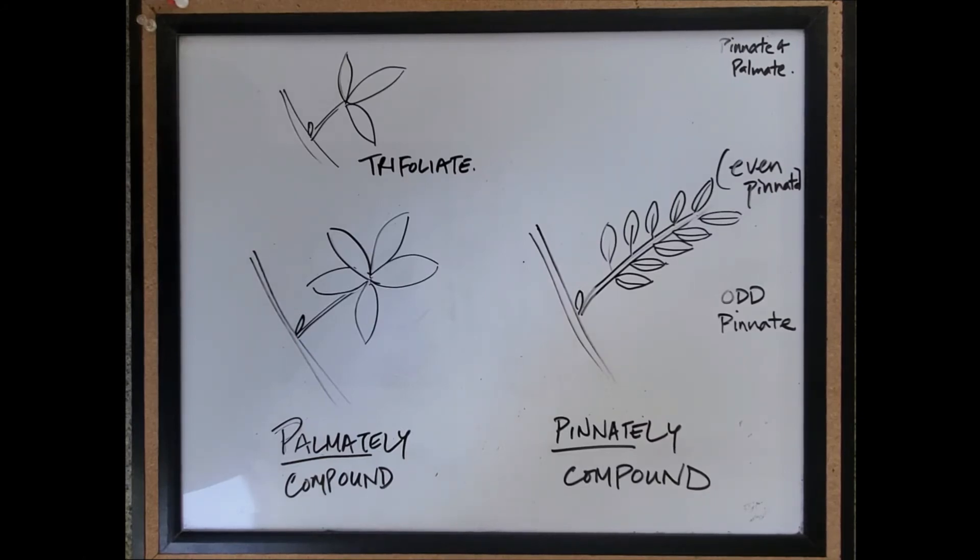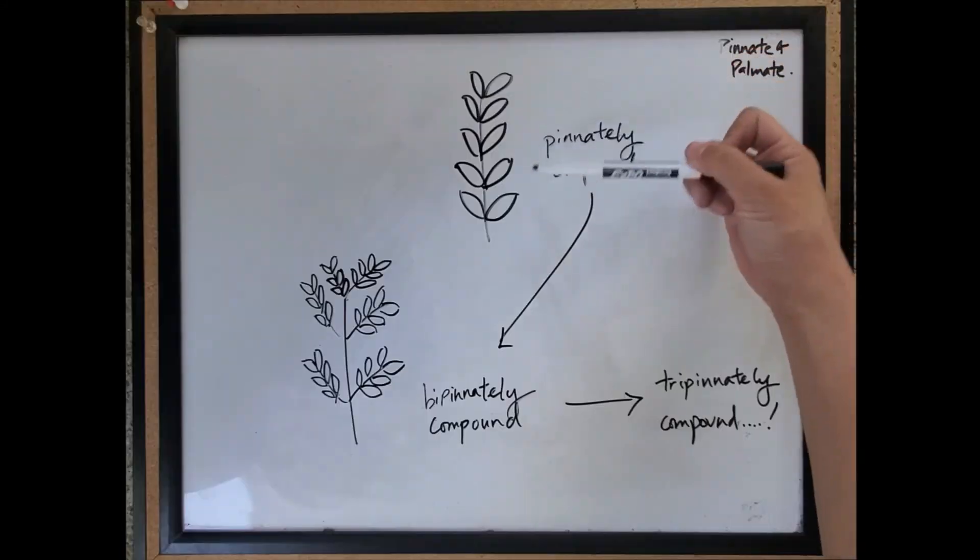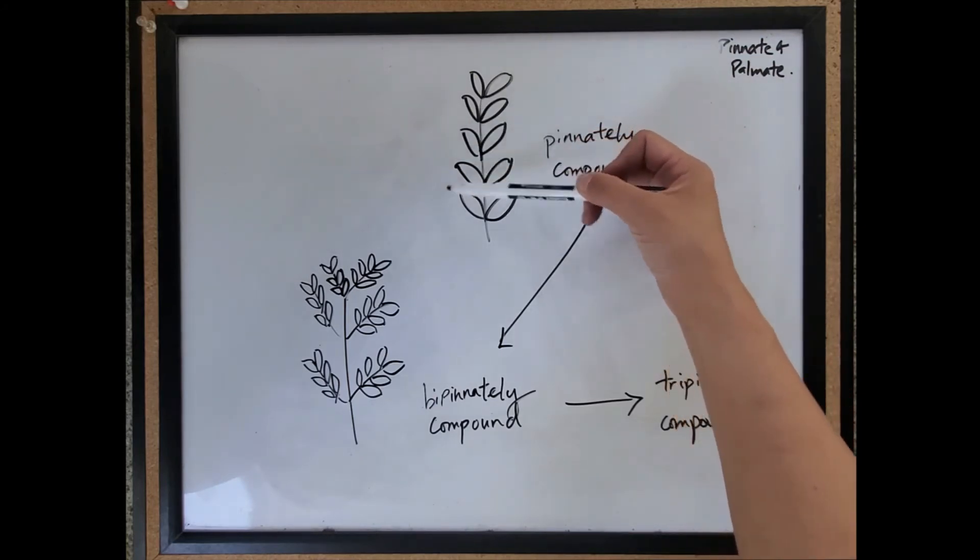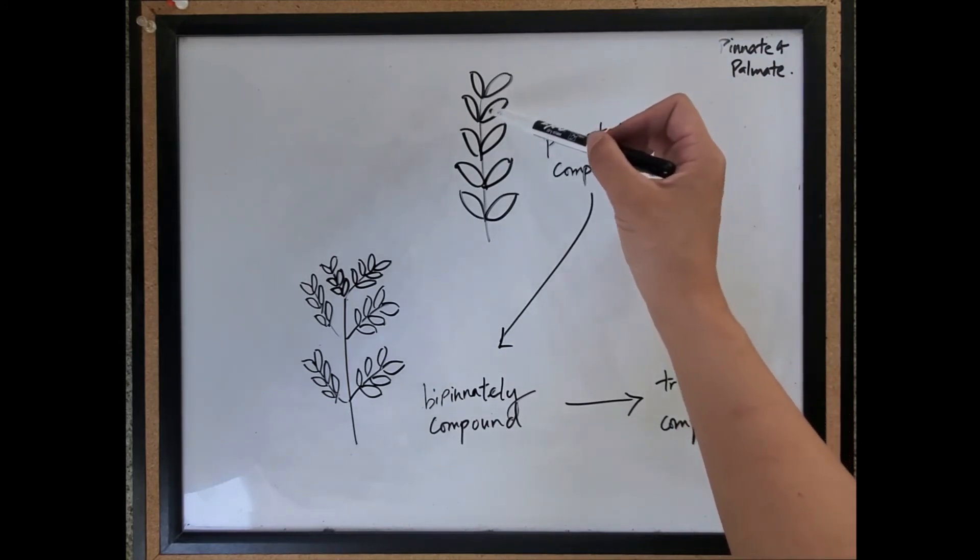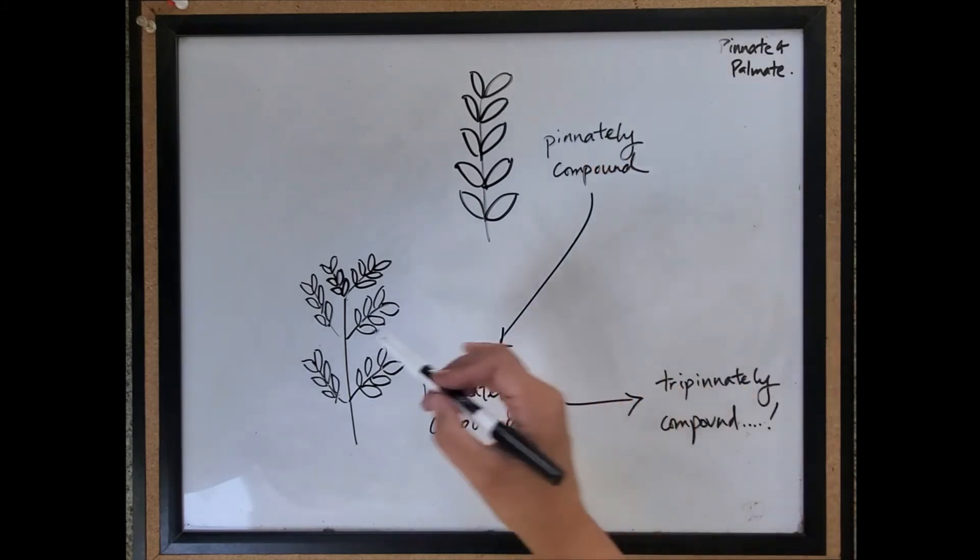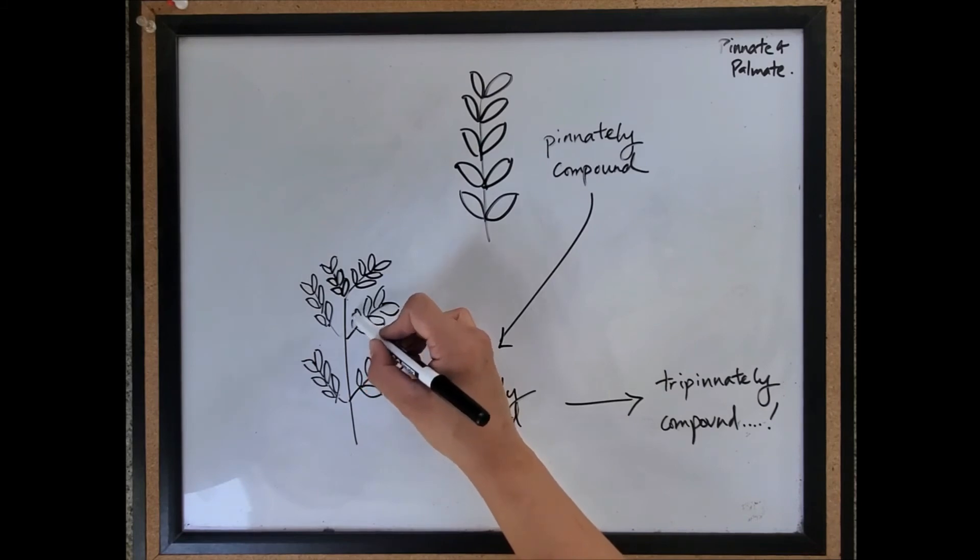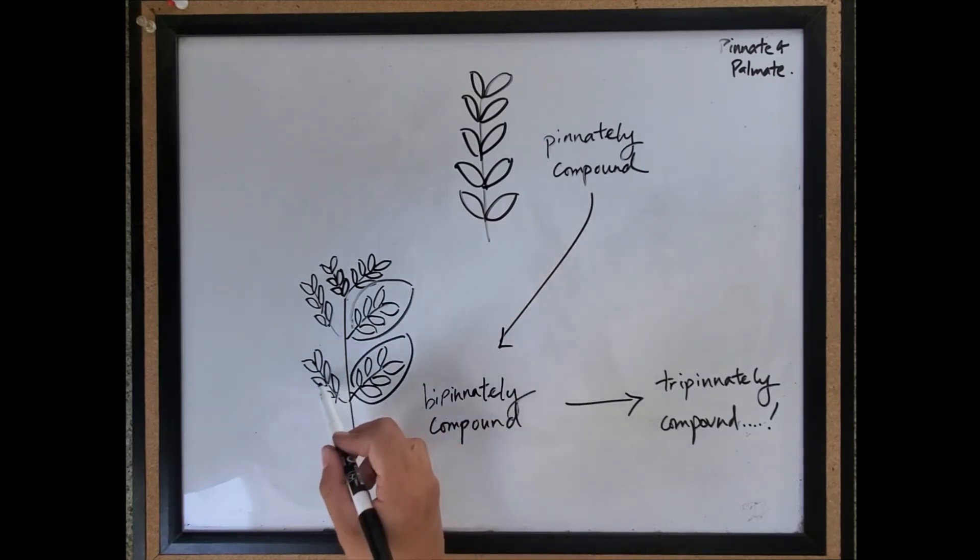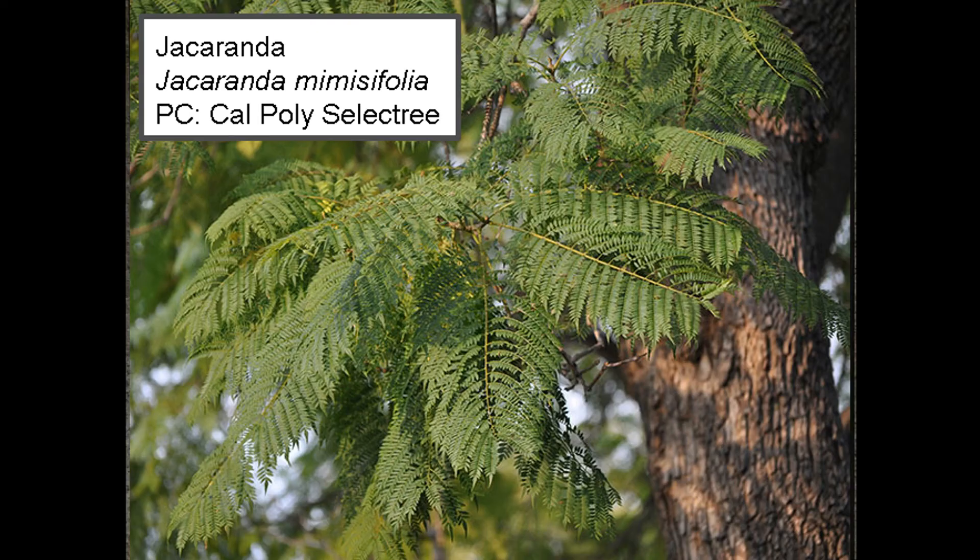I just have one more thing to explain which I think will be helpful from a tree ID perspective, though it's not actually on the exam. A pinnately compound leaf has replaced the original blade with multiple leaflets. But these individual leaflets can become further subdivided into another level. If you can imagine, this used to be a leaflet, but now it's become these separate, further dissected leaflets. This is called a bipinnately compound leaf.